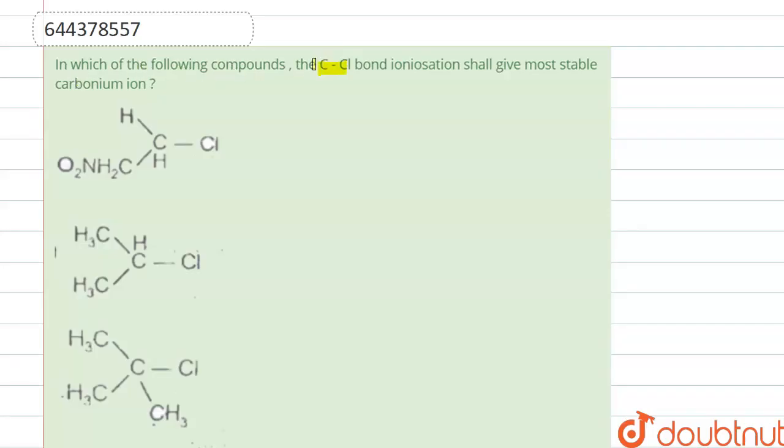In which of the following compounds, the C-Cl bond ionization shall give the most stable carbonium ion? So when C-Cl bond breaks, it forms carbocation, right? Here positive charge occurs and this is the form of carbocation.